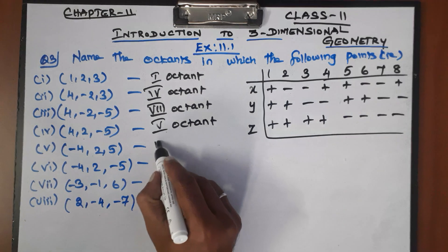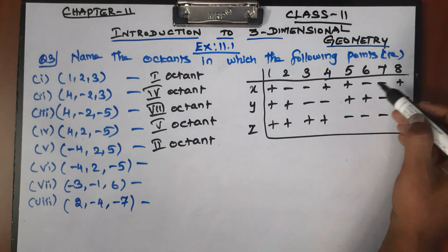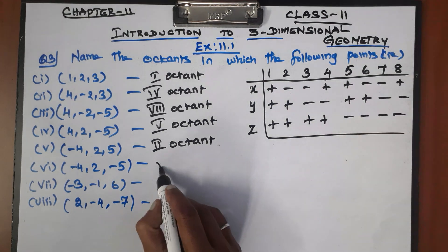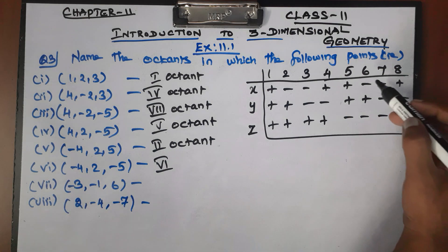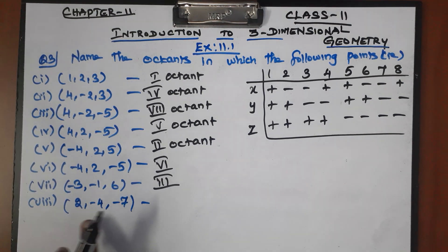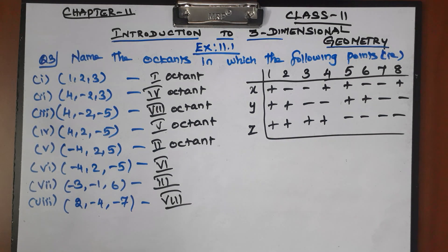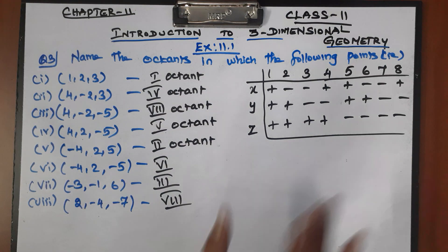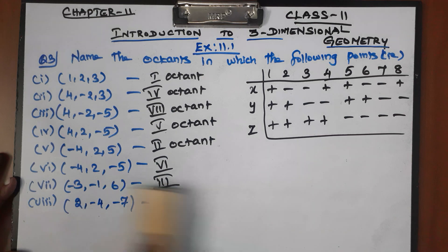For example: (-,-,+) is the second octant. Next, (-,+,-) and (-,+,+) correspond to the sixth and third octants. The last one, (+,-,-), is the eighth octant. This is the answer to question number 3 — write this table as required.